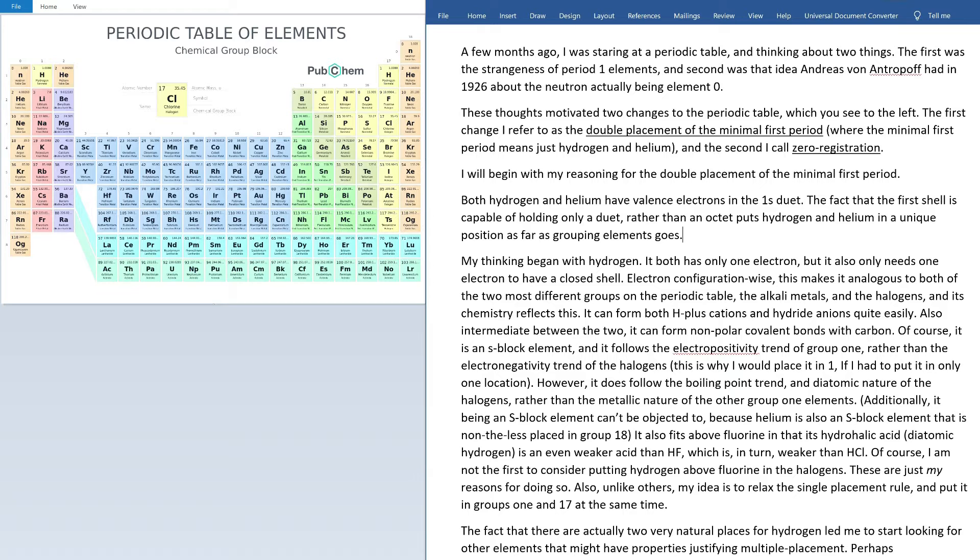Also, intermediate between the two, it can form almost completely nonpolar covalent bonds with carbon. Of course, it is an S-block element, and it follows the electropositivity trend of group 1 rather than the electronegativity trend of the halogens. This is why I would place it in group 1 if I had to put it in only one location. However, it does also follow the boiling point trend and the diatomic nature of the halogens rather than the metallic nature of the group 1 elements.